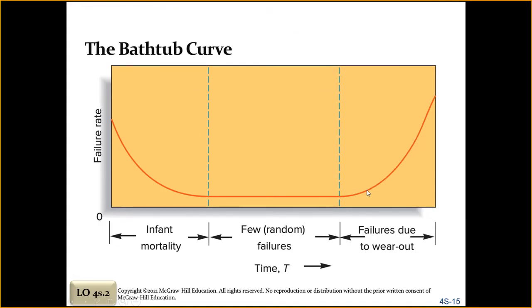The second way of looking at reliability considers incorporating the use of time. This approach is commonly used in product warranties, which pertain to a given time period after you make a purchase. A typical profile of a product's failure rate over time is illustrated in what's called the bathtub curve.